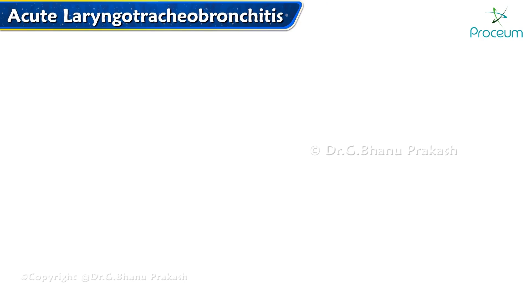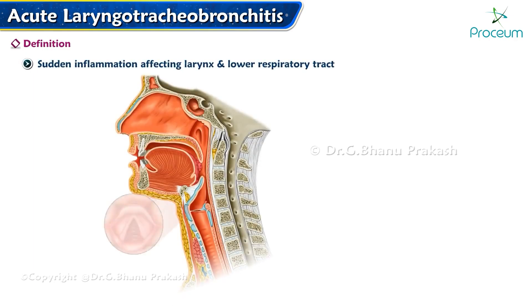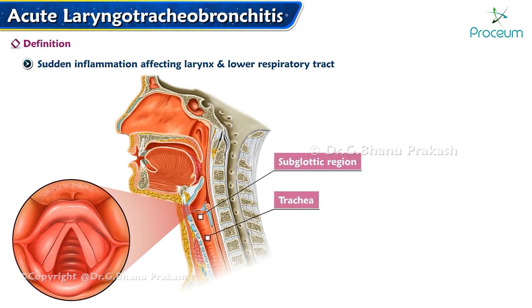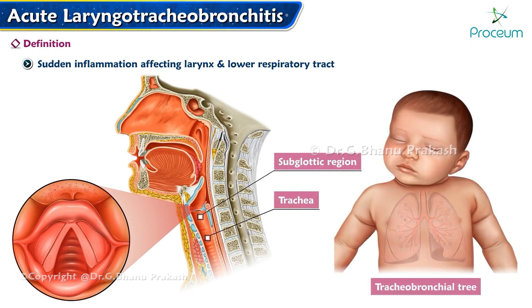Acute Laryngotracheobronchitis is characterized by sudden inflammation affecting the larynx and the lower respiratory tract, with a primary focus on the subglottic region, trachea, and the tracheobronchial tree.